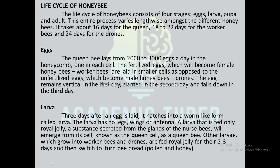Larva is the second stage of the life cycle of the honey bee. Three days after an egg is laid, it hatches into a worm-like form called a larva. The larva has no legs, wings, or antennae. A larva that is fed only royal jelly, secreted from the glands of a nurse bee, will emerge from its cell — known as the queen cell — as a queen bee. Larvae which grow into worker bees and drones are fed royal jelly for their first two to three days and then switch to bee bread, pollen, and honey.